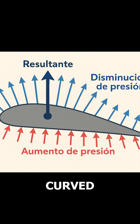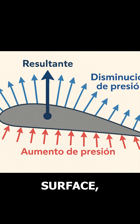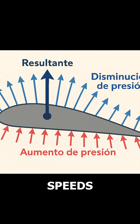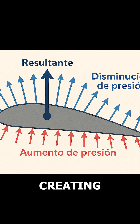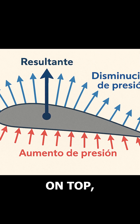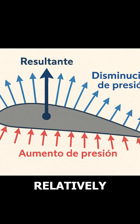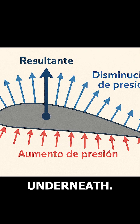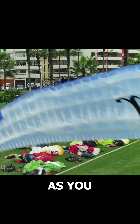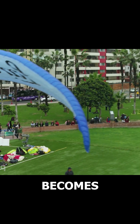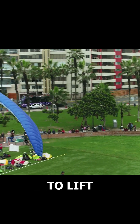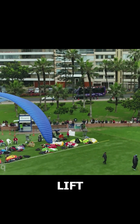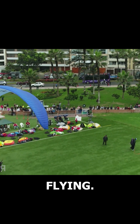And because of that curved top surface, the air speeds up over the top, creating lower pressure up there. Lower pressure on top, relatively higher pressure pushing up from underneath. And as you run faster, that difference becomes strong enough to lift you right off your feet. That's the moment — lift overcomes weight. You're flying.